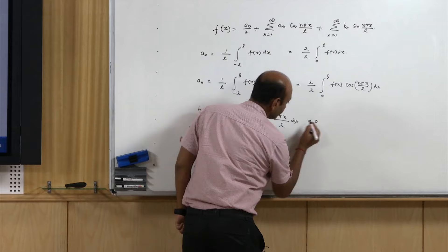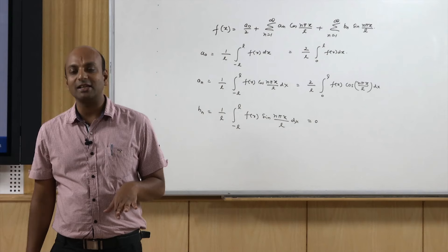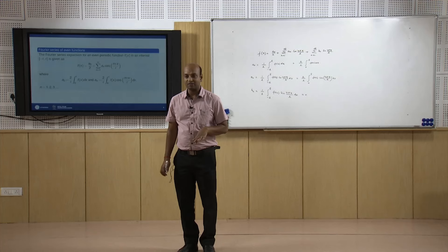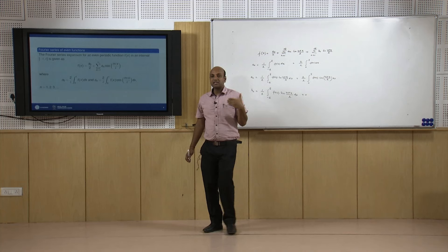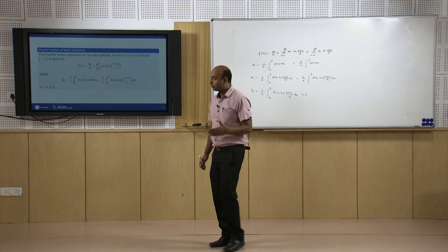Hence, if we have an even function, bₙ = 0 means no sine terms — only cosine terms will appear in the Fourier series expansion. So if a function is even, its Fourier series representation will contain only cosine terms.